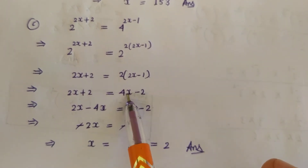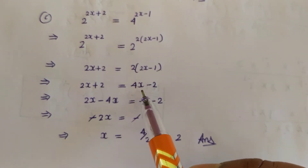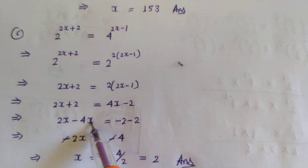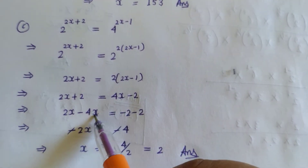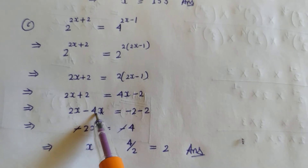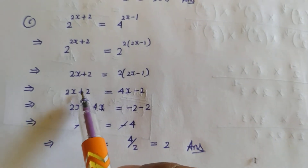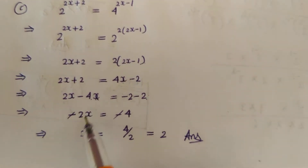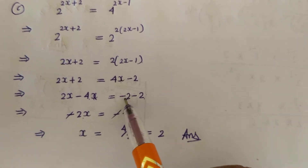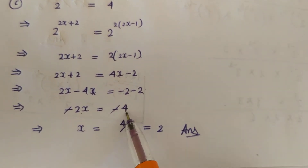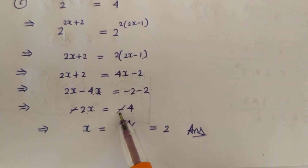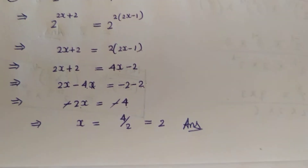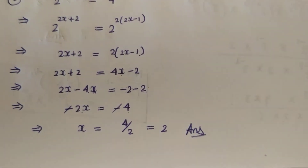So 2x + 2 = 4x − 2. Transposing 4x to the left-hand side gives 2x − 4x = −2 − 2, which is −2x = −4. The negatives cancel, so x = 4 divided by 2, giving x = 2. This is the required answer.